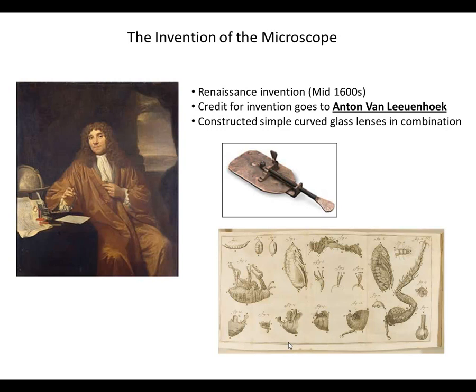But the microscope is really most important for us in science. It's obviously the basis for being able to investigate the cell, which is the basic unit of life. Credit for inventing the microscope goes to a Dutch merchant by the name of Anton van Leeuwenhoek. Leeuwenhoek is oftentimes referred to as the father of the microscope because he's really the first one who popularizes and mass produces microscopes.